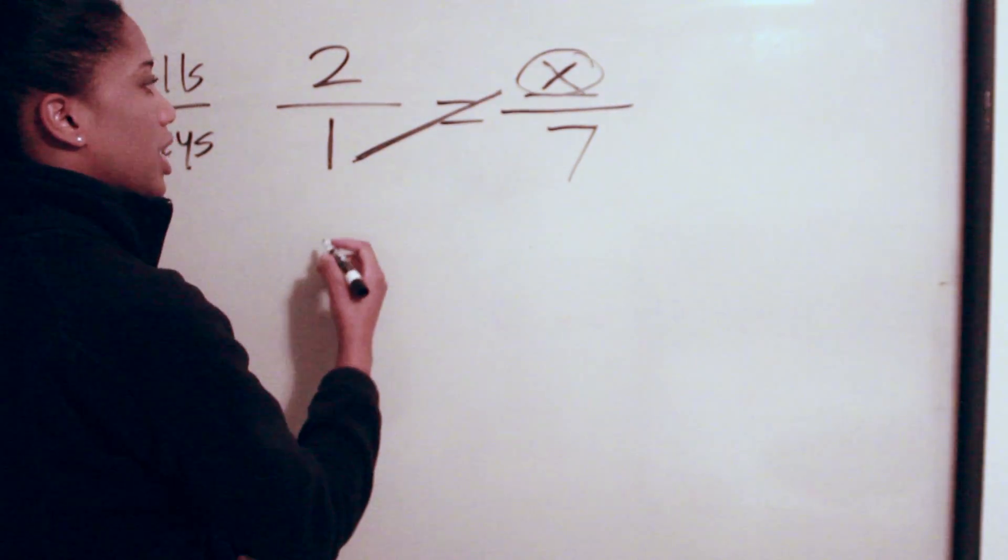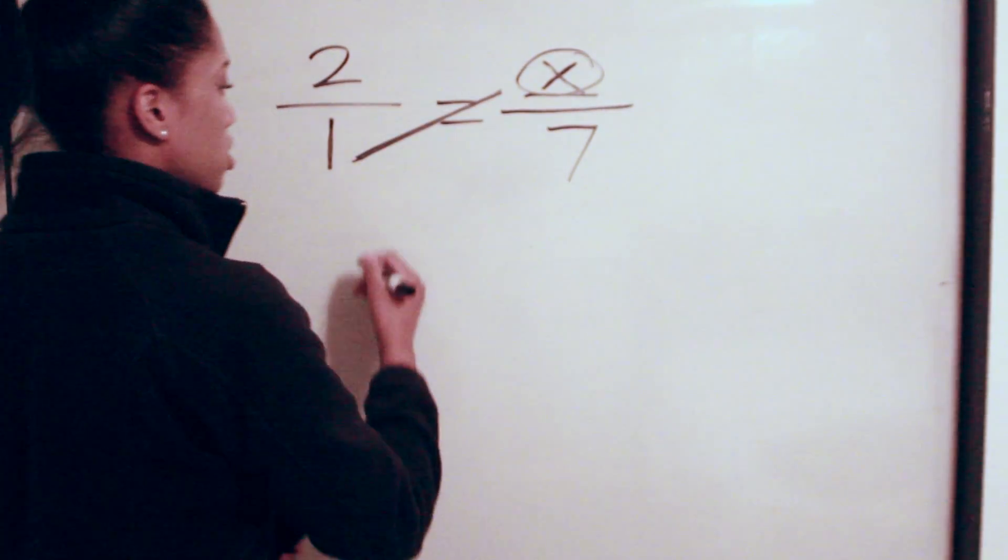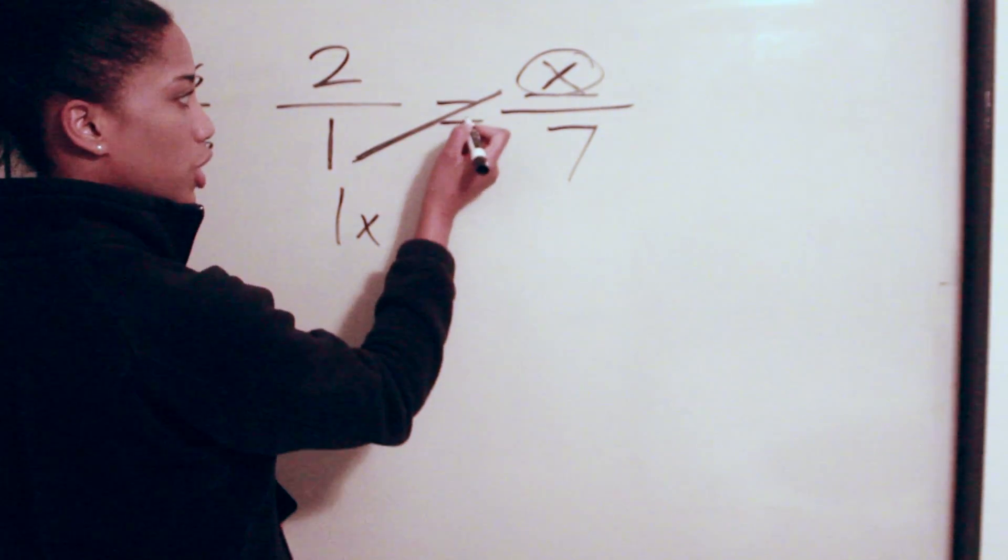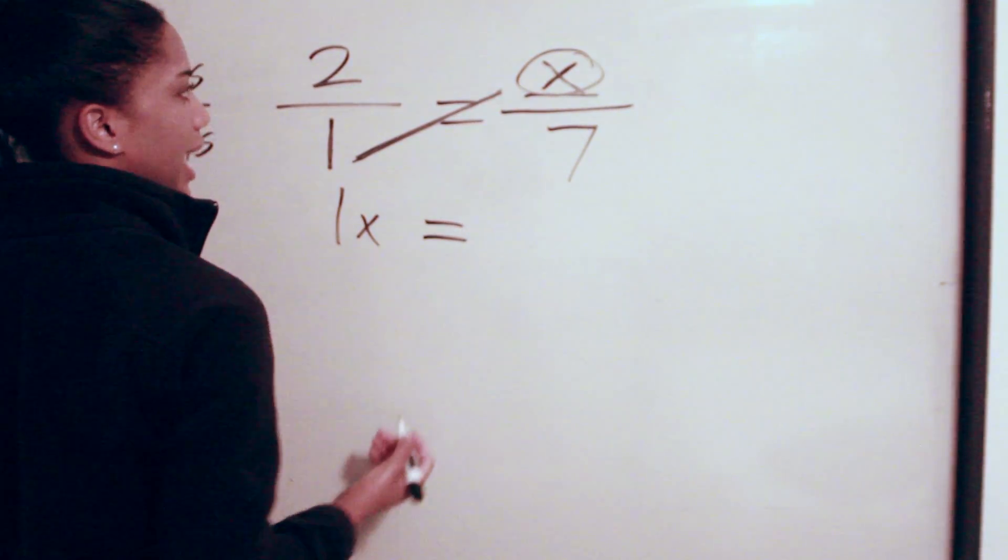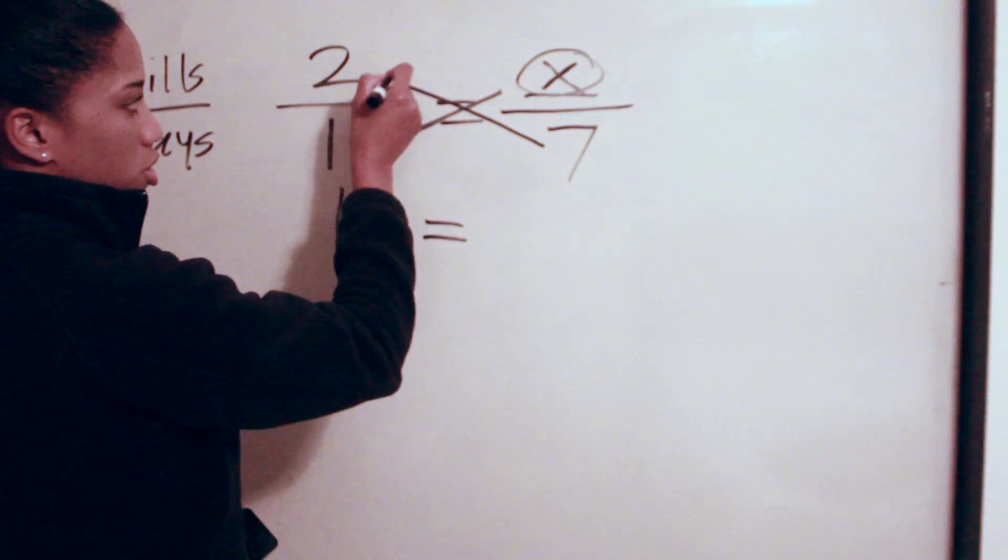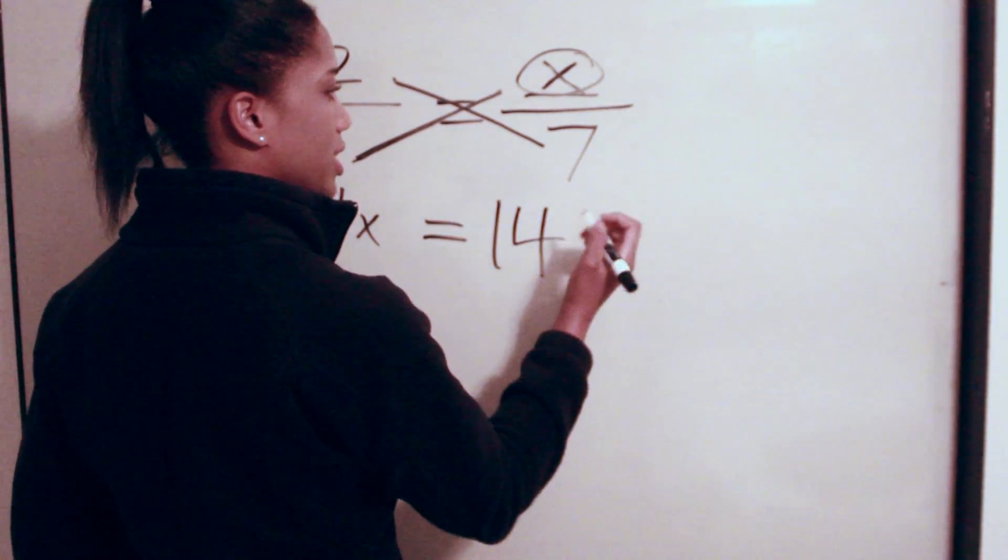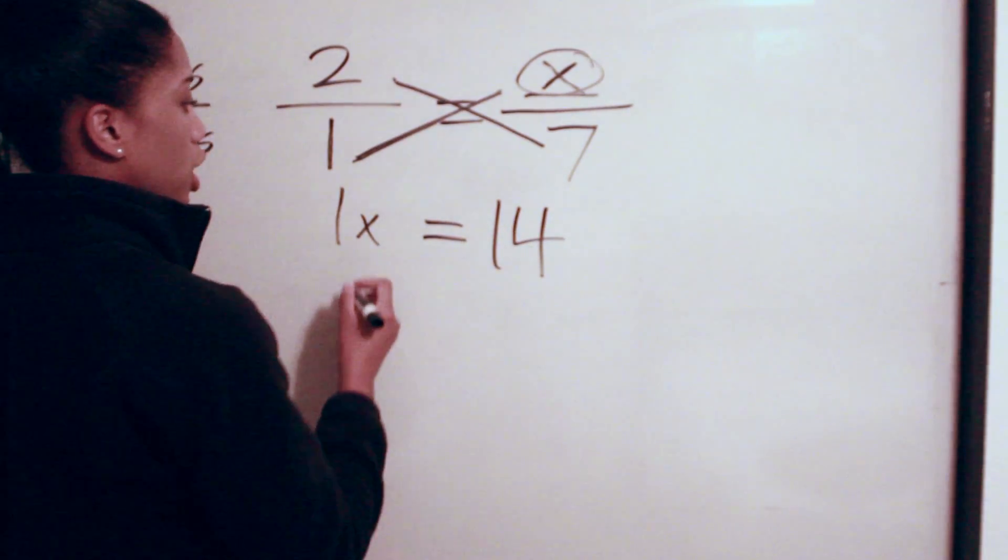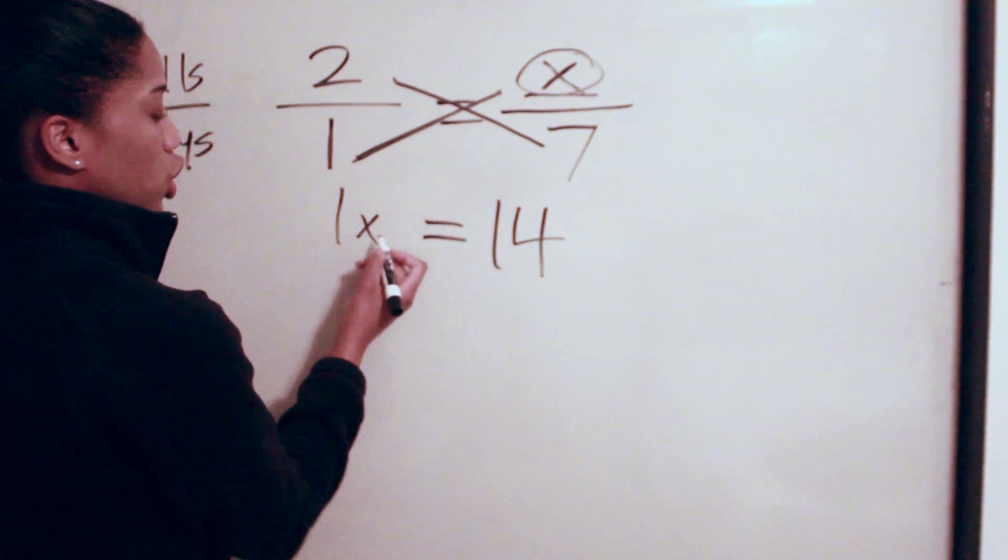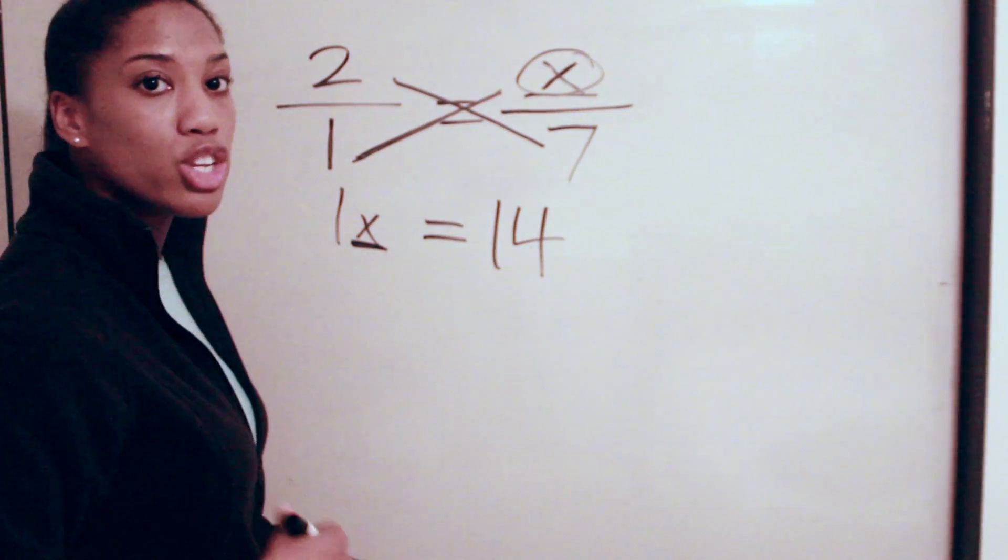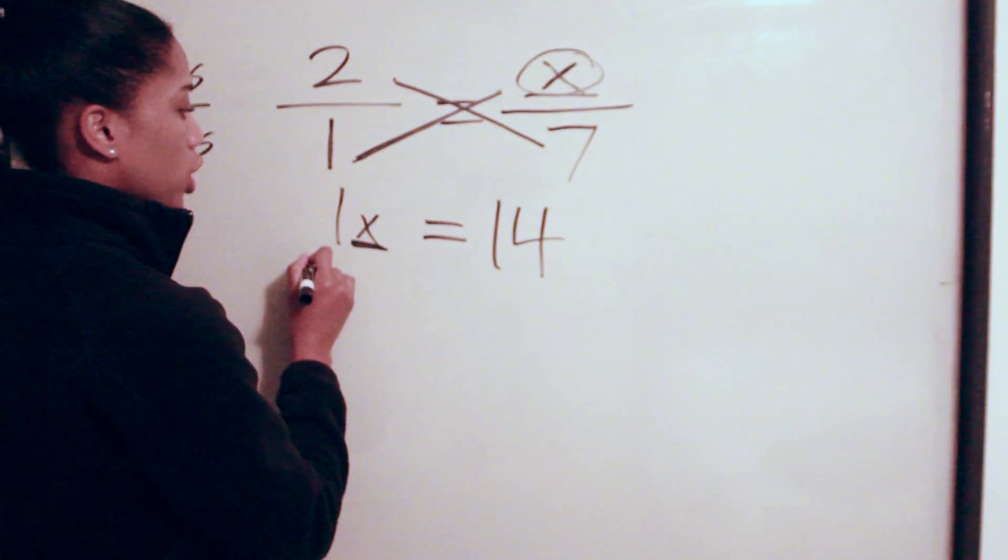You multiply those two, which gives you 1X. You keep your equal sign, and then you start here and cross multiply to there, which gives you 14. Seven times two is 14.